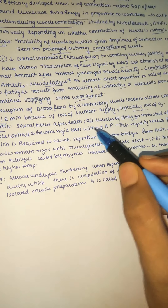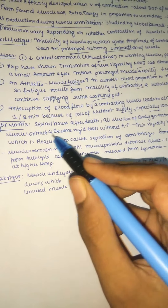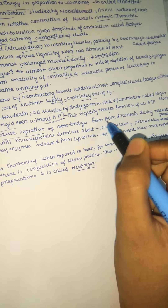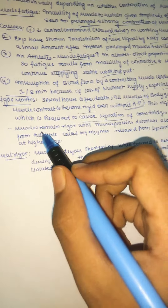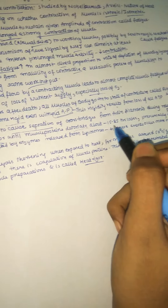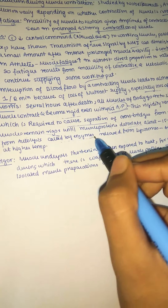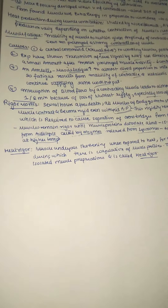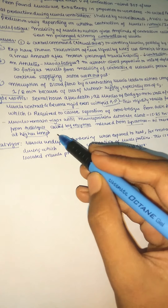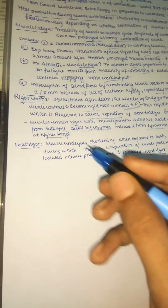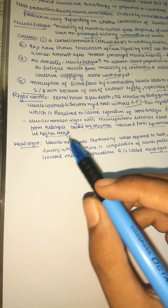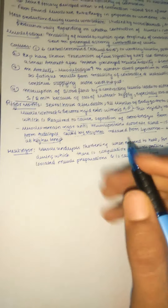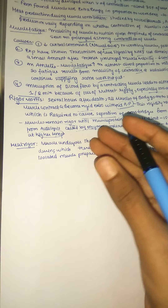Several hours after death, all muscles of the body go into a state of contracture called rigor mortis. Muscle becomes rigid without any action potential. This rigidity results from the loss of all ATP required to cause separation of cross-bridges from actin filaments during relaxation. The muscle remains rigid until muscle proteins deteriorate, about 15 to 25 hours later, presumably due to autolysis caused by enzymes released from lysosomes.